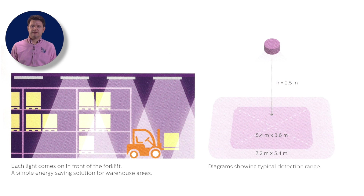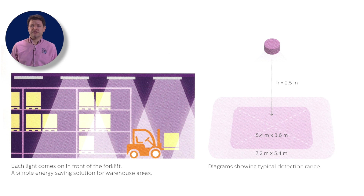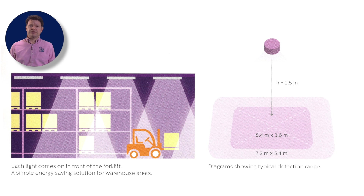Secondly, there must be one or more input devices which tell the luminaire what to do. This can be as simple as a manual switch on the wall. More often the signal comes from a movement detector. Photocells are another common input device. Note that sometimes each luminaire will have its own sensor, but larger installations will group the luminaires together so one sensor alters several luminaires.